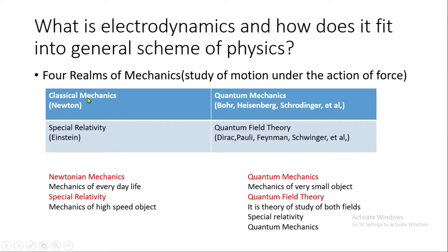Mechanics has four parts. The first part is classical mechanics, which was described by Newton. After that, quantum mechanics, described by Bohr, Heisenberg, Schrödinger, et al. Then special relativity, described by Einstein. And quantum field theory, described by Dirac, Pauli, Feynman, Schrödinger, et al.